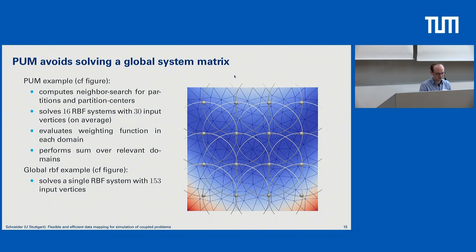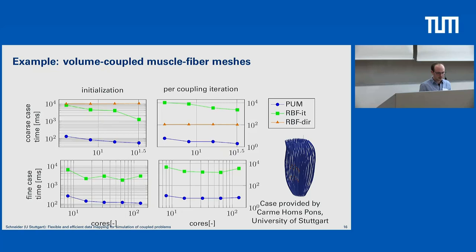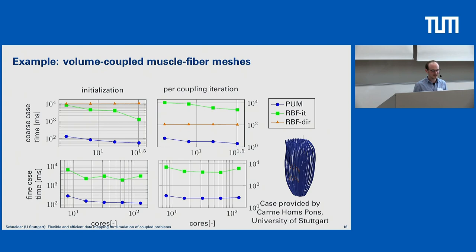To give a feeling of how this affects mapping performance, I brought two user examples. The first was provided by Kame, who will also talk later today. Here we consider a volume-coupled muscle fiber — specifically a biceps muscle — with two volumetric meshes of the same geometry but meshed differently. We have a coarse case of around 10,000 vertices and a fine case of around 50,000 vertices. We execute our mapping for different core counts, starting from eight cores and doubling for each experiment.